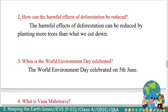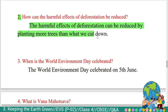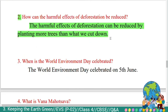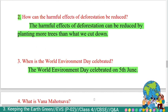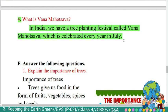Second question: 'How can the harmful effects of deforestation be reduced?' Answer: The harmful effects of deforestation can be reduced by planting more trees than what we cut down. Third question: 'When is Environment Day celebrated?' Answer: The World Environment Day is celebrated on 5th June. Fourth question: 'What is Vanna Mohotsava?' Answer: In India, we have a tree planting festival called Vanna Mohotsava which is celebrated every year in July.